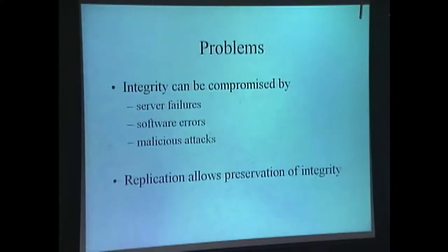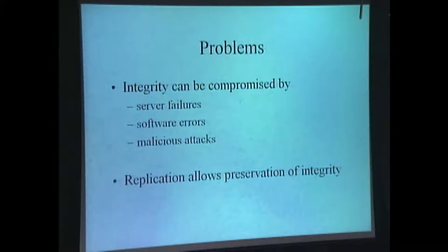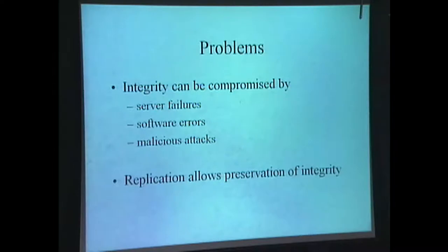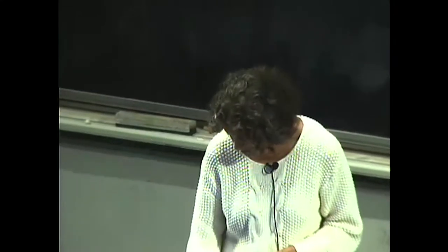There are three main reasons why integrity might be compromised: hardware might fail, there can be bugs in your software, and we can have malicious attacks. The way you survive these kinds of problems is by replication. The basic idea is that if one copy of the information is hacked into or destroyed, you can still provide access because there are other copies. The replicas must carry out a protocol that guarantees they are in sync, so the backup copy is up to date with respect to what the primary has stored.